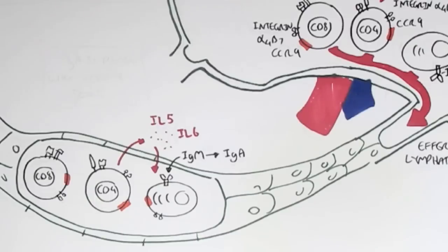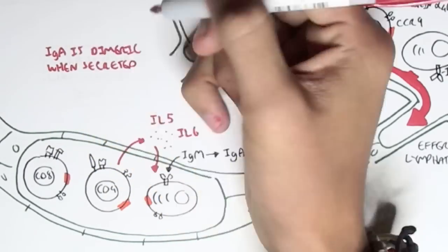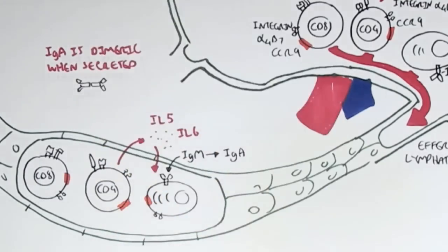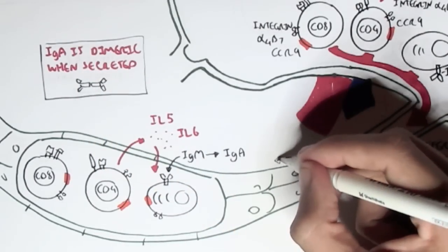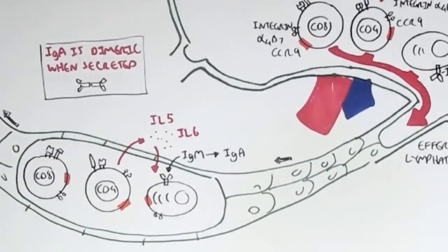IgA antibodies are very important in the mucosal immune system. When secreted by plasma cells in the mucosal immune system, they are usually dimeric, meaning two antibodies joined back-to-back. However, if IgA is secreted into the plasma, they are usually monomeric, meaning just one antibody. In the mucosal immune system it is dimeric, and they are very important in preventing infection by either neutralizing a pathogen's antigen or bringing an antigen outside of the body into the lumen to be secreted out.